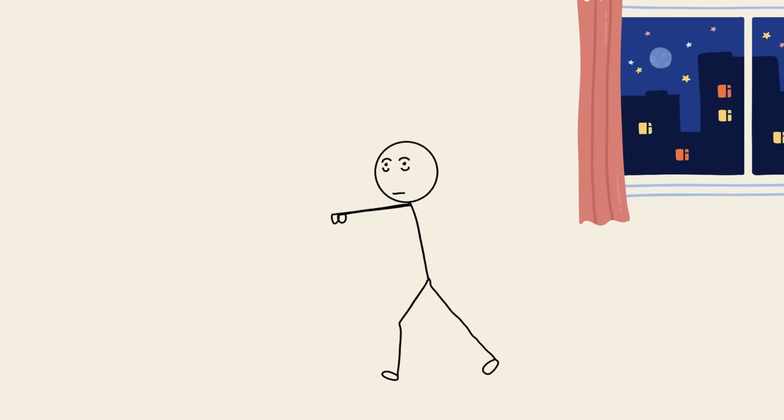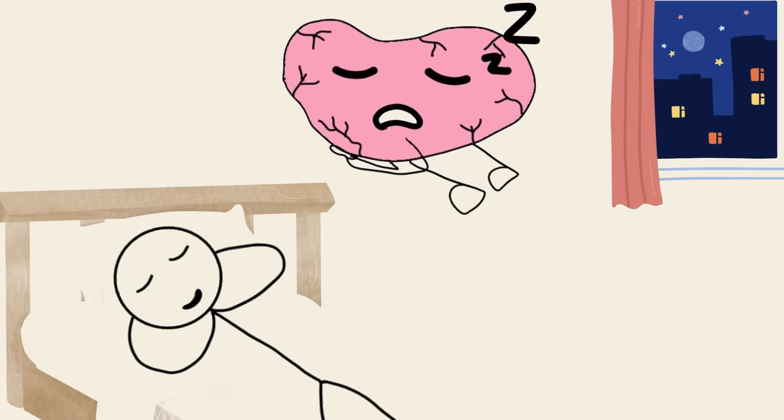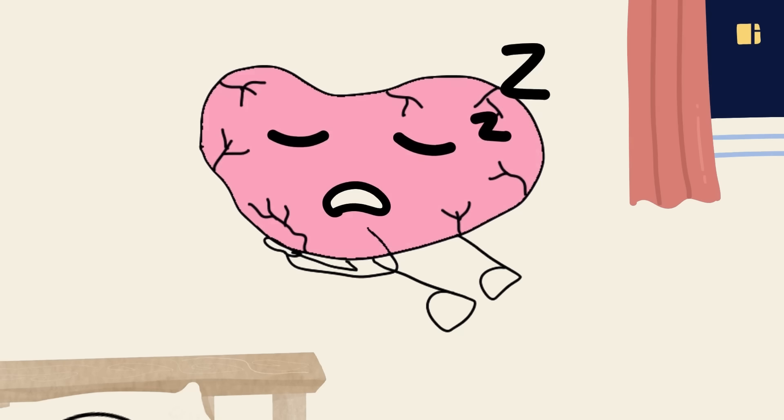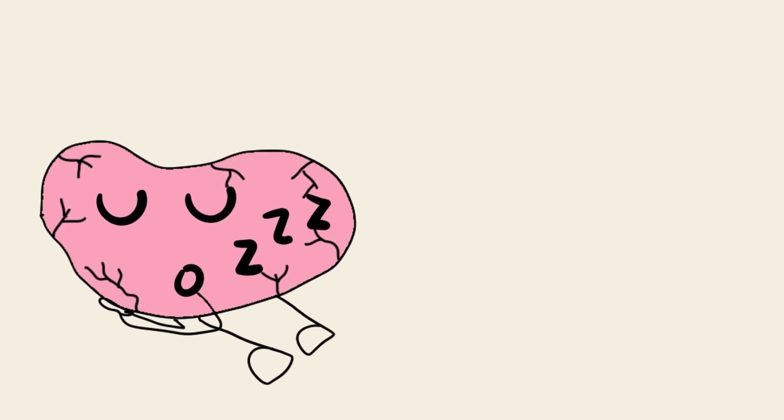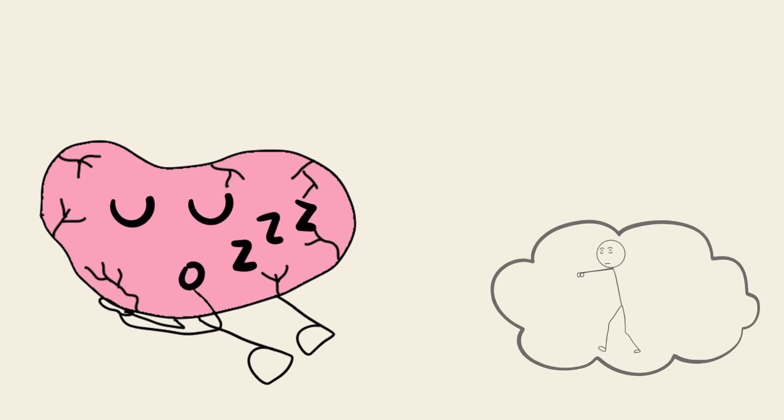Sleepwalking usually happens during non-REM sleep, when your brain should be in its deepest, most restful state. But instead, something misfires. Your motor system activates while your awareness remains dormant. And because your brain is still essentially asleep, there's no memory of the event.